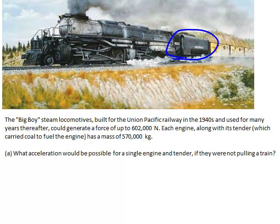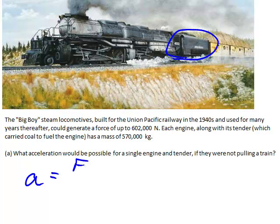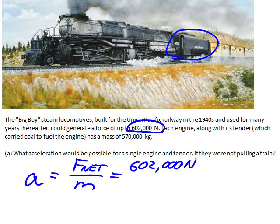So let's take a look at that calculation. We're going to use Newton's second law: a is F net over m. And the net force is 602,000 newtons. We're ignoring any friction—we're just assuming that the friction is insignificant for this problem. And the total mass is 570,000 kilograms.